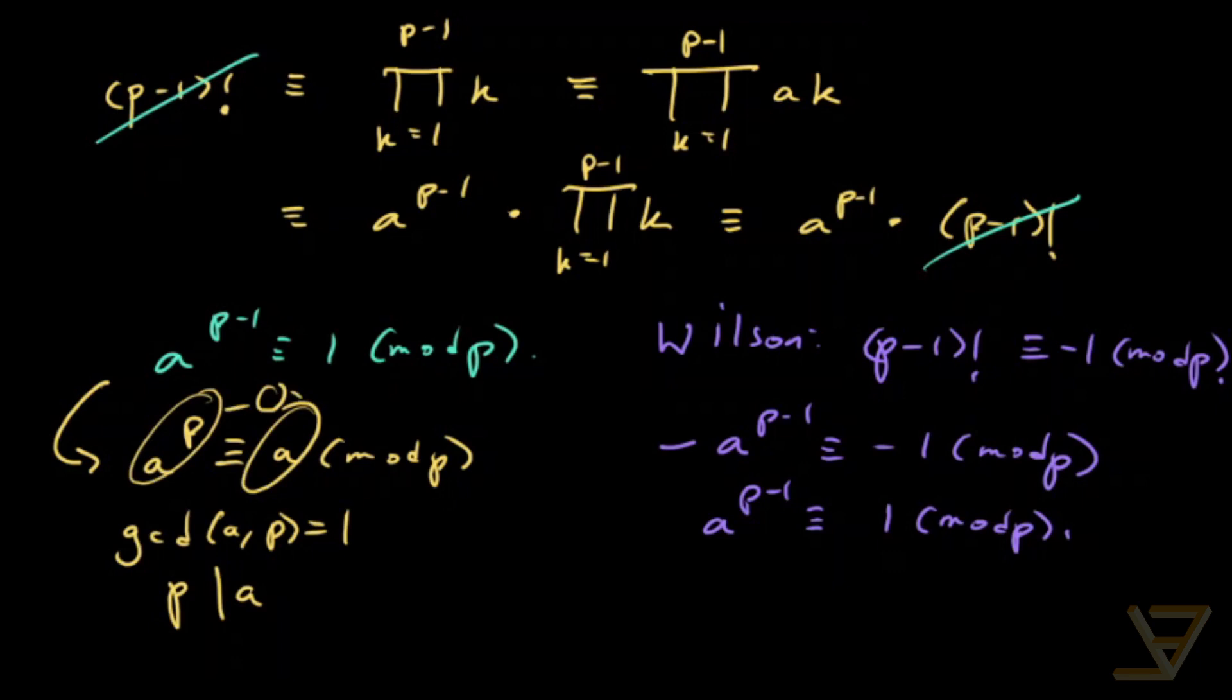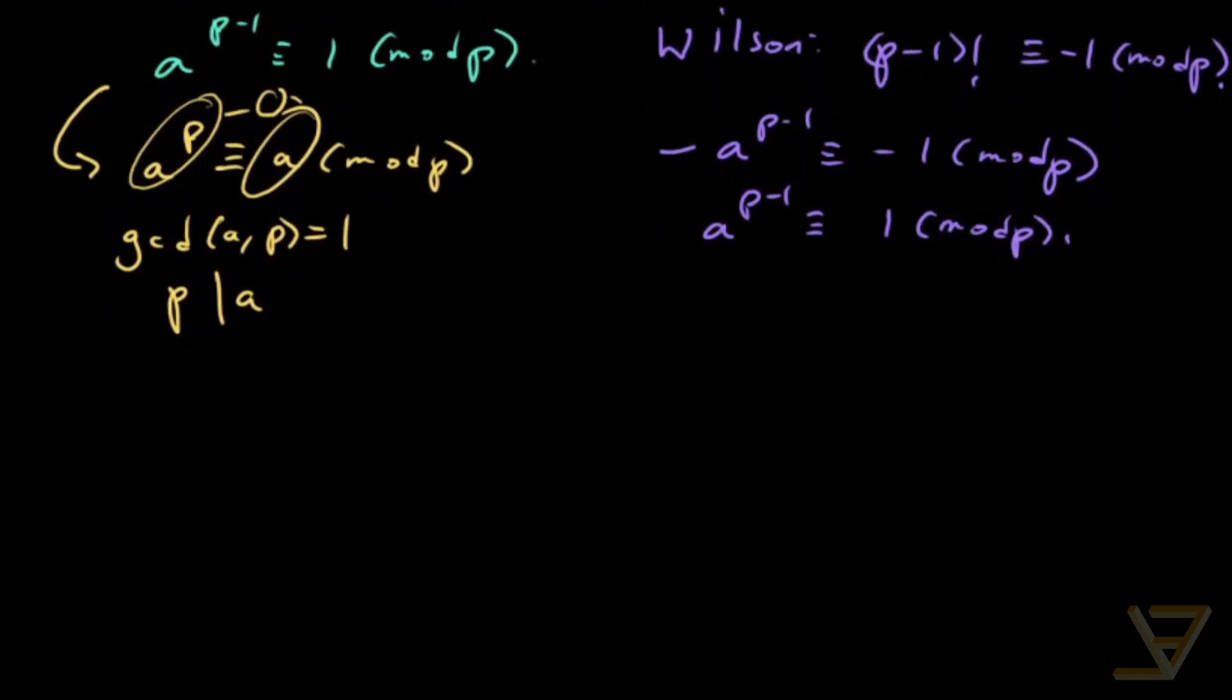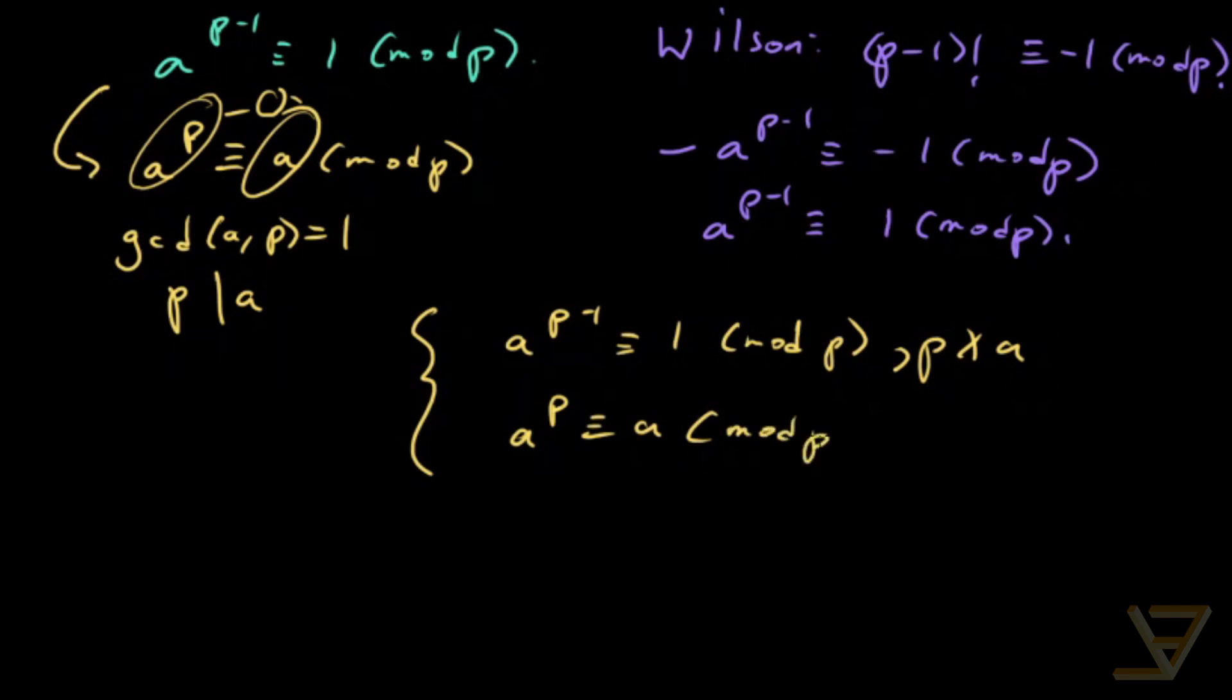So this is the second form of Fermat's Little Theorem, which is equivalent to the original. So the two forms are a to the p minus 1 is congruent to 1 mod p if p does not divide a, and a to the p is congruent to a mod p for all integers a, even if a is not co-prime to p.